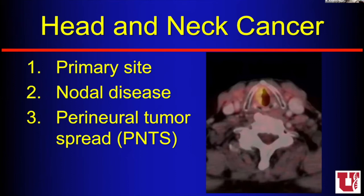Every time I think about a head and neck cancer, whether it's squamous cell carcinoma or anything else, I think about three big things to include in my report: the primary site — where is the lesion centered, which is very important for staging; lymph nodes; and perineural tumor spread. For every case, I want to think about those three things. In terms of TNM staging, if you read my impression, I'm going to include everything you need — tumor location, size, whether it crosses midline, invades bone or muscle, lymph node locations, and perineural tumor spread.